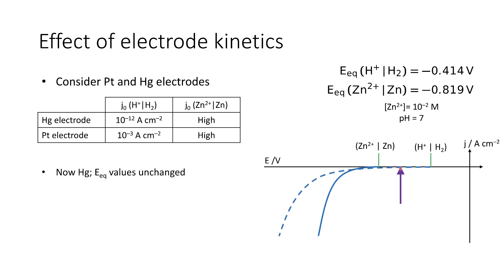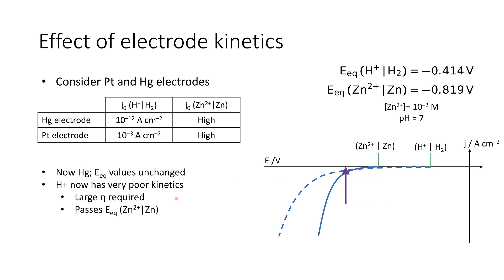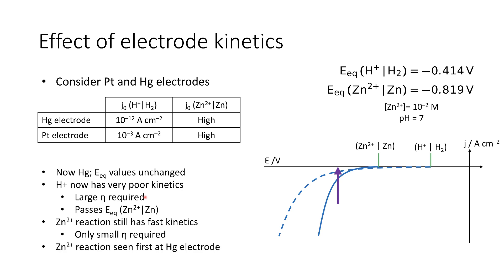Now consider mercury electrodes. The equilibrium values are unchanged, but hydrogen now has very poor kinetics — nine orders of magnitude difference in exchange current density. This means we require a very large overpotential to drive a current, considerably greater than that required for the zinc couple. Because zinc still has fast kinetics and requires only a small overpotential, predominantly at the mercury electrode we would expect to see the zinc reaction first. The effect of electrode kinetics can't be ignored — by designing our electrode material, we can tailor the exchange current density to get different results.